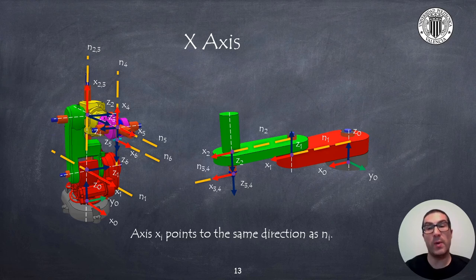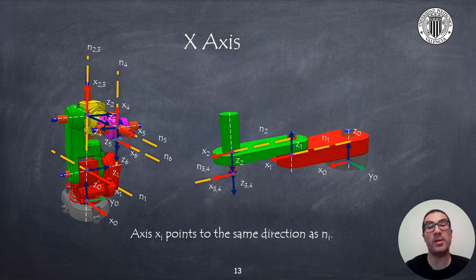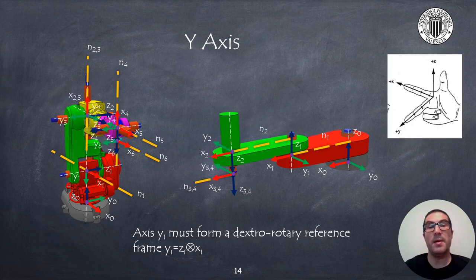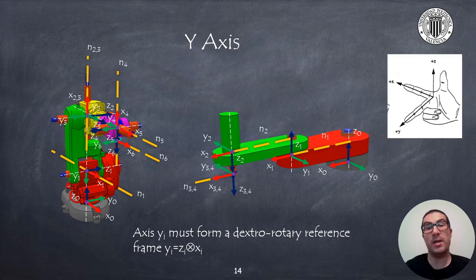For example, the x1 axis could point in the opposite direction, but it would imply that the angle between x0 and x1 would be 180 degrees, which will make some of the Denavit-Hartenberg parameters non-zero. But this is an arbitrary criterion — you can freely choose the direction of the x-axis. The y-axis must form a right-handed reference frame with the x- and z-axes, obtained by applying the right-hand rule: pointing the thumb to the z-axis, the index finger to the x-axis, and the middle finger pointing 90 degrees from the two previous fingers. That will tell us the direction of the y-axis.